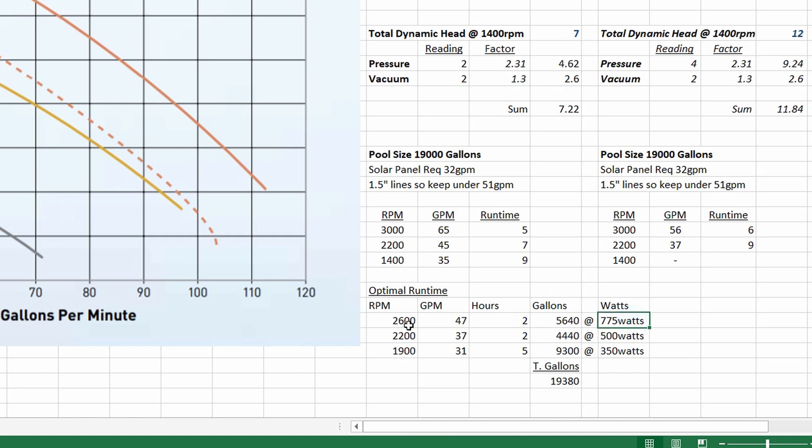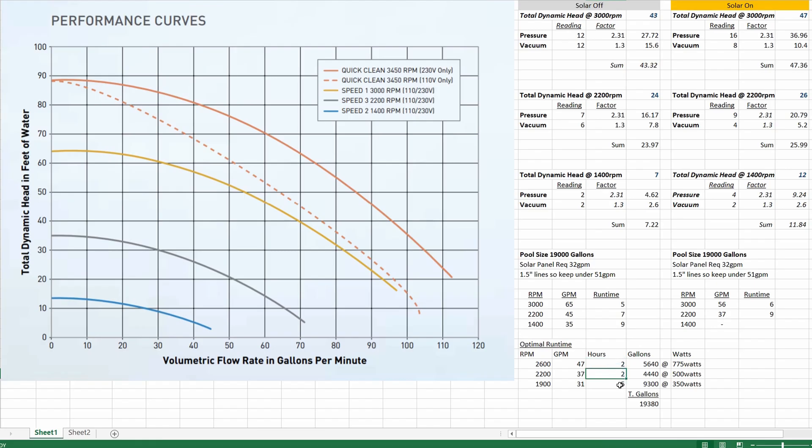So I'm going to keep my pump at 1900 RPMs for most of the day, it's going to keep everything nice and quiet and efficient. So after a 9 hour run time I'll have filtered about 19,380 gallons through my system and I'll coincide my run time to match when the sun is up so that I can collect that solar heat from my pool most effectively.